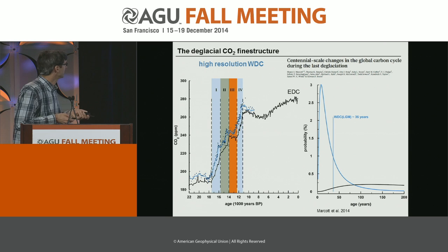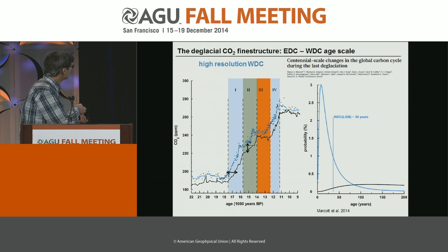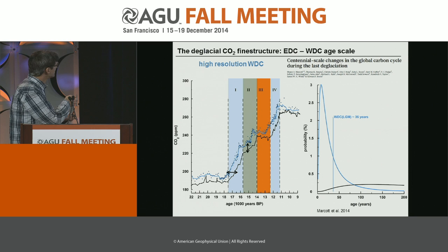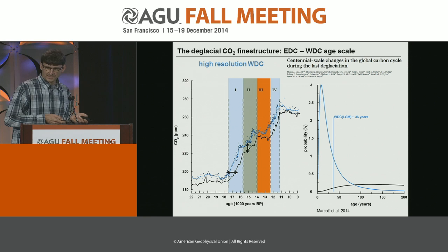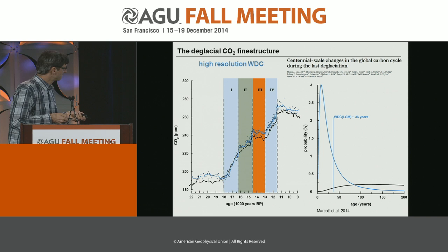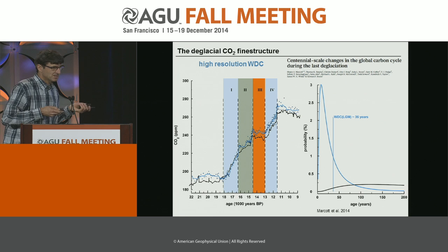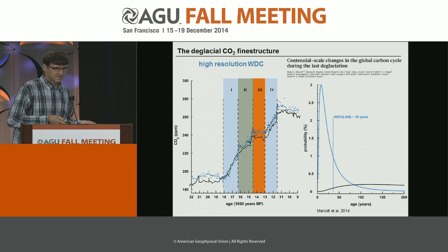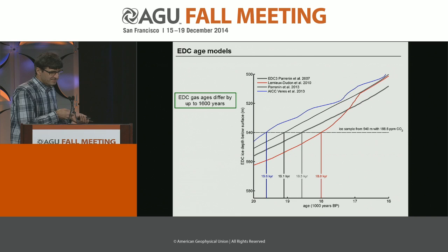Zooming in, we do see some mismatch on the age scale, and a second feature is a slight offset in the data. When EDC is plotted on a new time scale, it fits better. But the problem is you can't easily decide which age scale is better. Now with the WAIS Divide ice core, which is layer-counted and has a narrow age distribution, we can really pin down the ages and help constrain the chronologies of the other cores. For a certain depth at the EDC core, the chronologies of the last 10 years came up with quite different numbers — it's really huge.